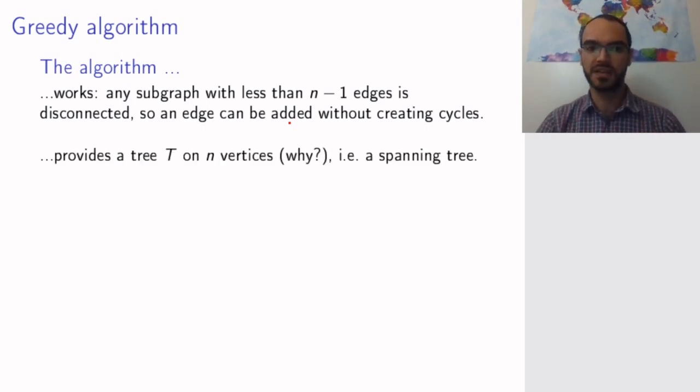But why does it give me a spanning tree? Well, it gives me a spanning tree because I'm adding n minus one edges to n vertices and not creating cycles. Such a graph is automatically a tree. And since it includes all the vertices of my original graph, it is a spanning tree.